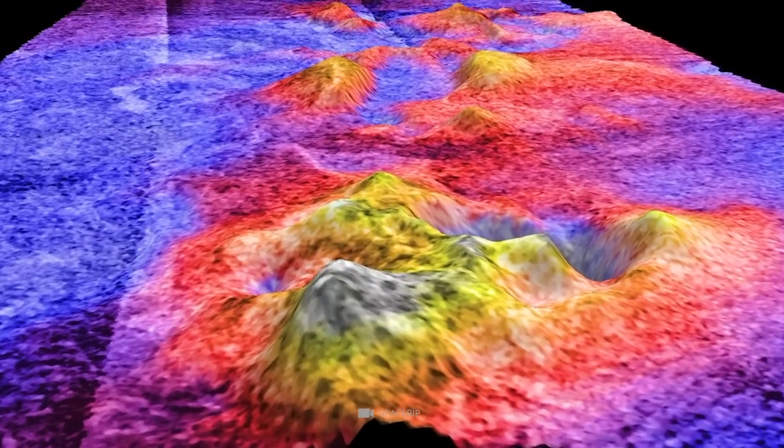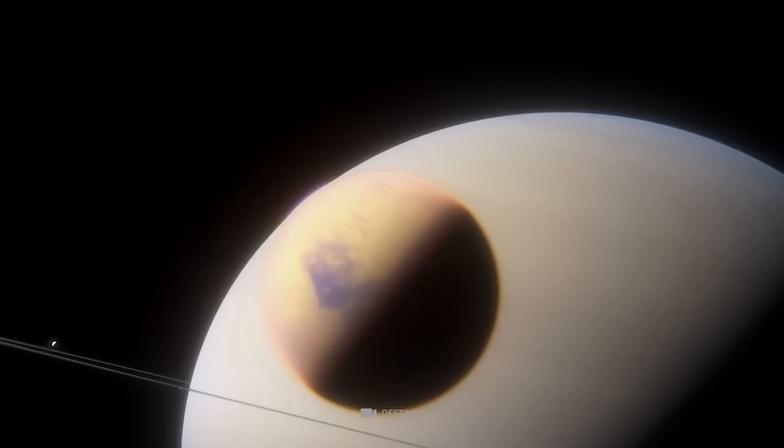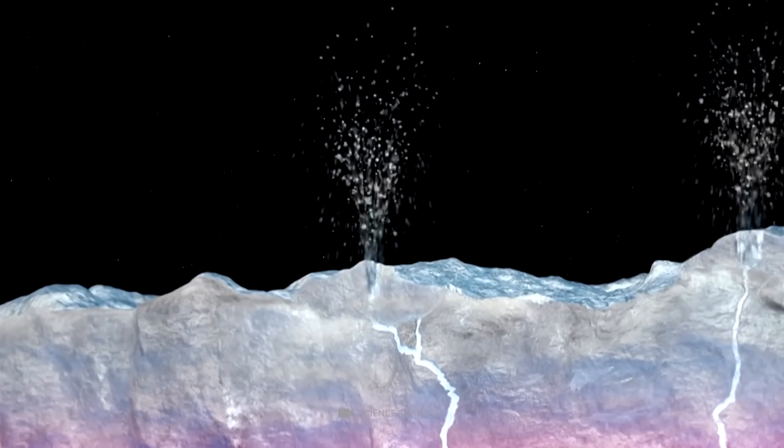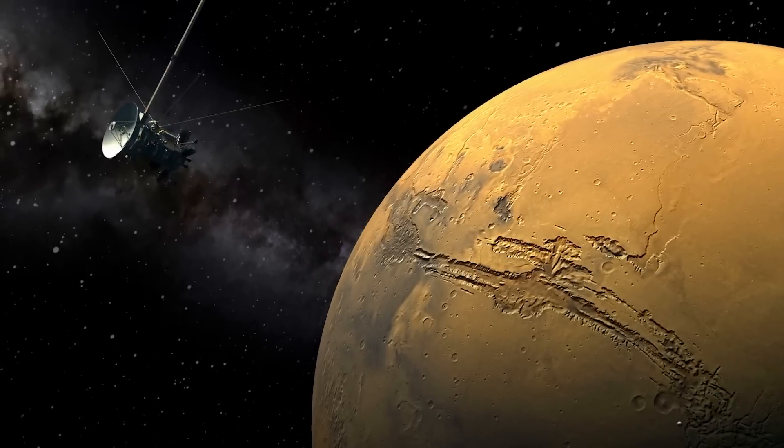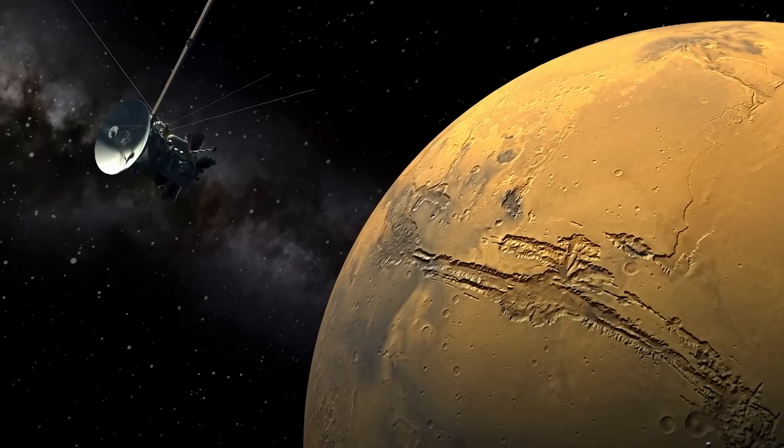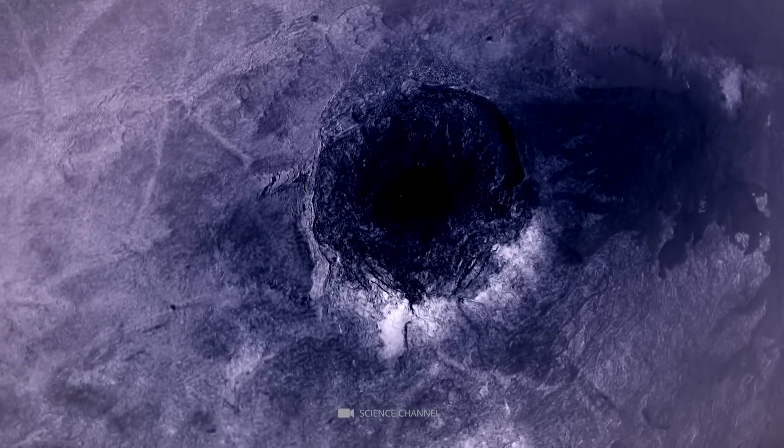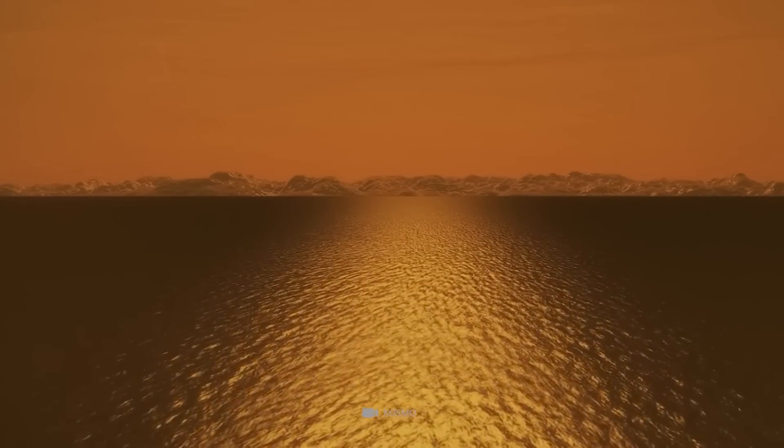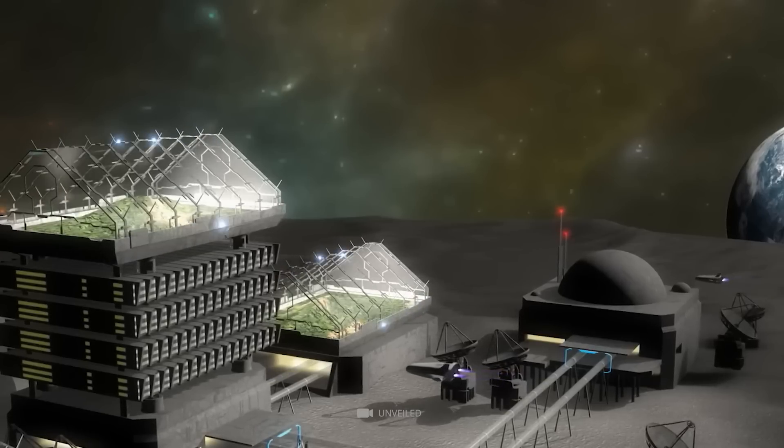The exact mechanism for the eruption of these cryovolcanoes is not yet fully understood, but it is thought to be related to the warming effects of tidal forces from Saturn and the moon's internal heat. The identification of cryovolcanoes on Titan's surface is a significant discovery because it suggests that this moon has a dynamic and active geology and is quite different from other icy bodies in our solar system. The presence of these ice volcanoes also adds to the possibility of a subsurface ocean and the potential for habitable environments on Titan.